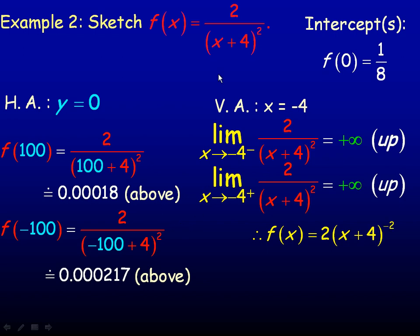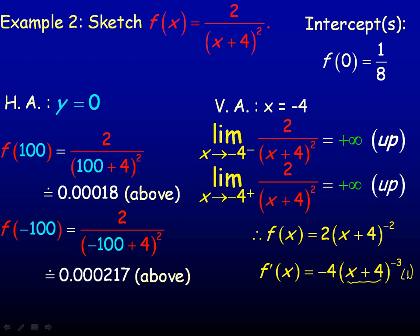Now let's find the first derivative. I'll rewrite the function by bringing x plus 4 squared up to the numerator with a negative exponent, giving 2 times x plus 4 to the negative 2. Differentiating, the negative 2 comes down and multiplies by 2 to give negative 4, times x plus 4 to the power of negative 3. There is chain rule, but the derivative of x plus 4 is just 1, so it doesn't change the result. The first derivative is f prime of x equals negative 4 over x plus 4 cubed.